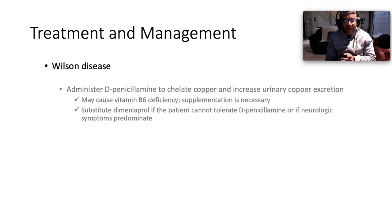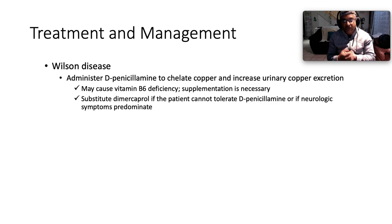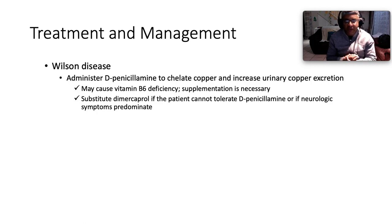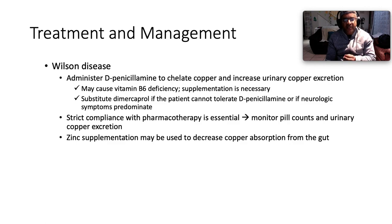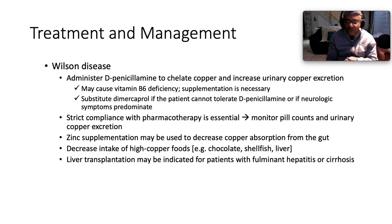For Wilson disease, administer the copper chelator D-penicillamine to increase urinary copper excretion. This may cause vitamin B6 deficiency associated with peripheral neuropathy, so pyridoxine supplementation is necessary. Substitute dimercaprol if the patient cannot tolerate D-penicillamine or if neurological symptoms predominate. Strict compliance with pharmacotherapy is essential. Zinc supplementation may be used to decrease copper absorption from the gut. Decrease intake of high-copper foods such as chocolate, shellfish, and liver. Liver transplant may be indicated for fulminant hepatitis or cirrhosis.